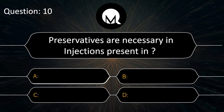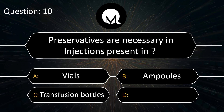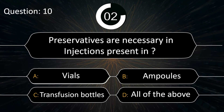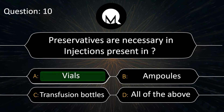Preservatives are necessary in injections present in: vials, ampoules, transfusion bottles, or all of the above. The answer is vials.